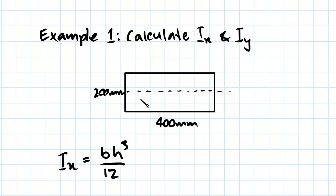And that's reflected in this formula. So we have this h cubed. So you can see that the moment of inertia about this axis is mostly dependent on this height here.